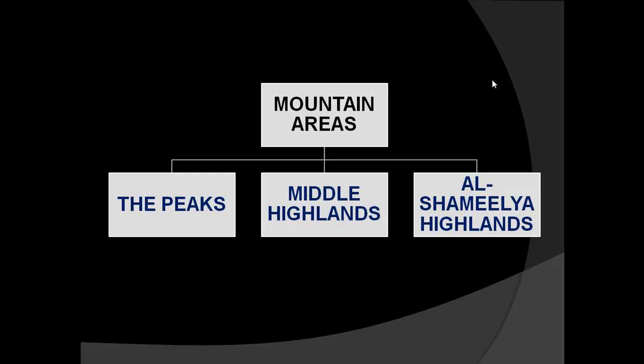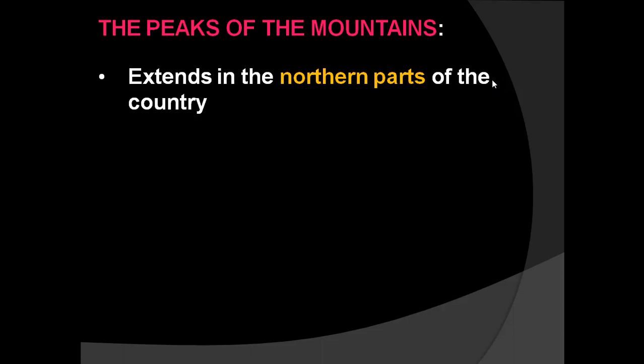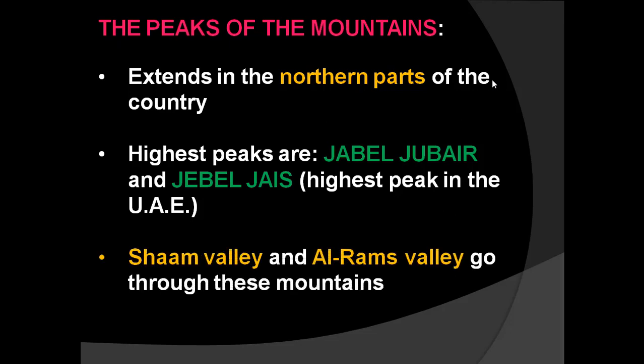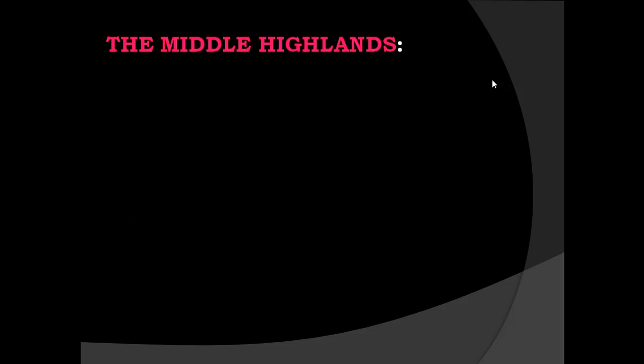The mountain range can be divided into three parts: the peaks, the middle highlands, and the Al-Shamelia highlands. The peaks of the mountains extend in the northern parts of the country. The highest peaks are Jebel Jais and Jebel Hafeet — Jebel Jais being the highest peak in the UAE. Sham Valley and Al-Rams Valley are valleys that lead to these mountains.